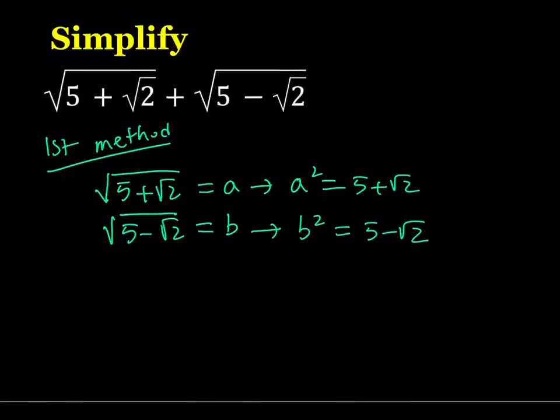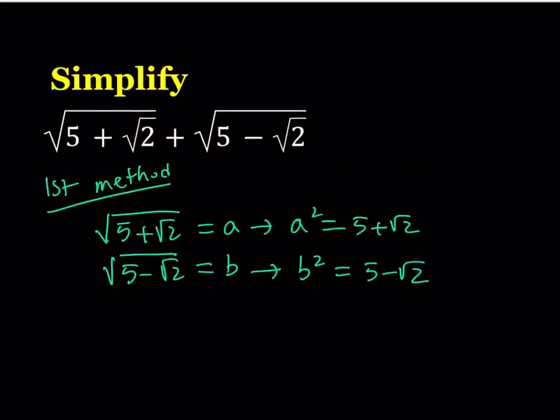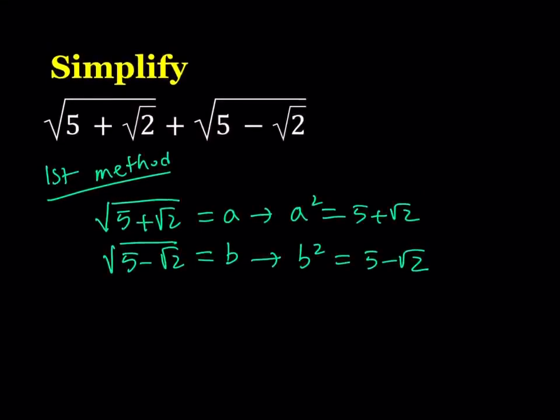Now, one thing I want you to notice about this expression is that 5 is greater than root 2. Therefore, this is a real number. And the sum of two radicals in the real world is always going to be greater than or equal to 0. So, we know that this is a positive quantity. Obviously, it can't be 0, but we know it's positive.